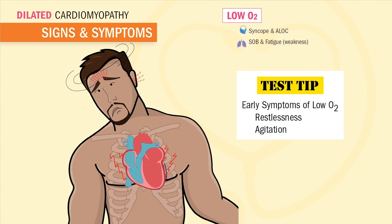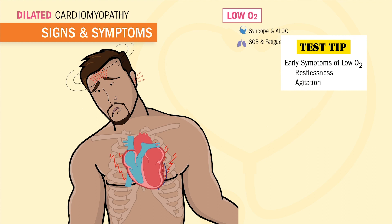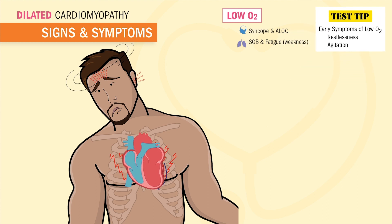Restlessness and agitation are usually the first signs that indicate low oxygen. In the heart, we'll also see angina and ECG dysrhythmias such as heart block. For the respiratory tract, we'll see shortness of breath called dyspnea, presenting as rapid shallow breathing.